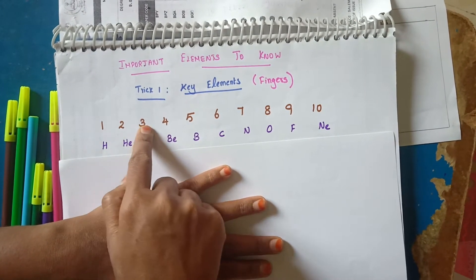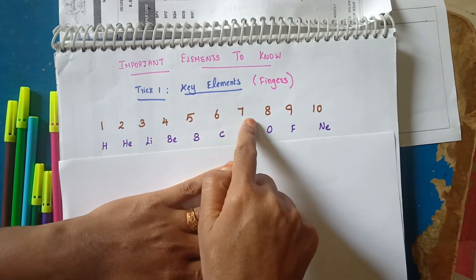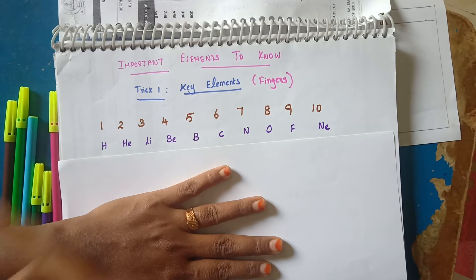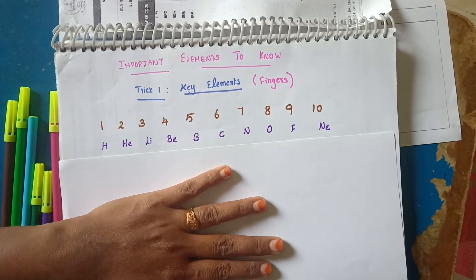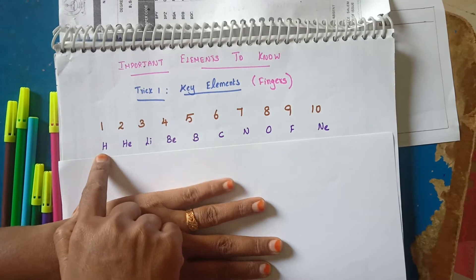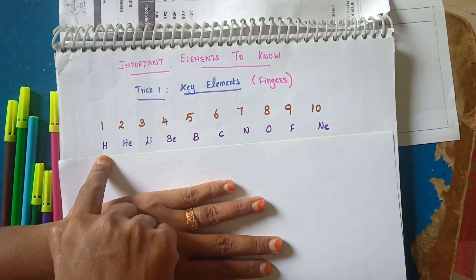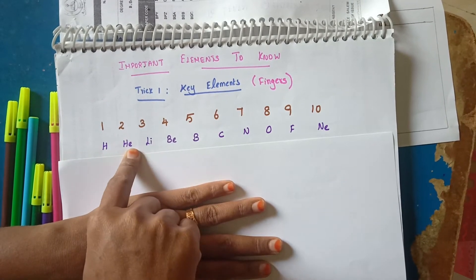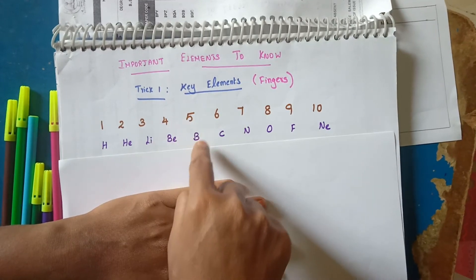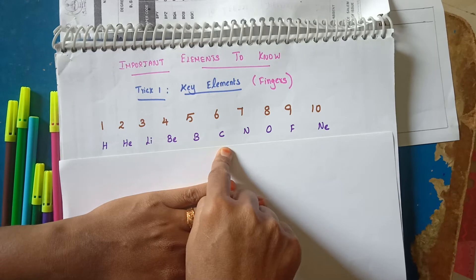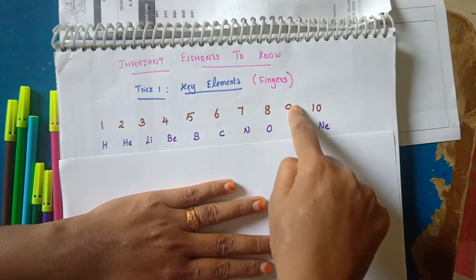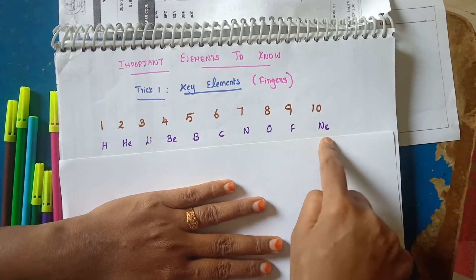1, 2, 3, 4, 5, 6, 7, 8, 9, 10. This is how I already studied in a little class. The first element is Hydrogen, second is Helium, third is Lithium, fourth is Beryllium, fifth is Boron, sixth is Carbon, seventh is Nitrogen, eighth is Oxygen, ninth is Fluorine, tenth is Neon.